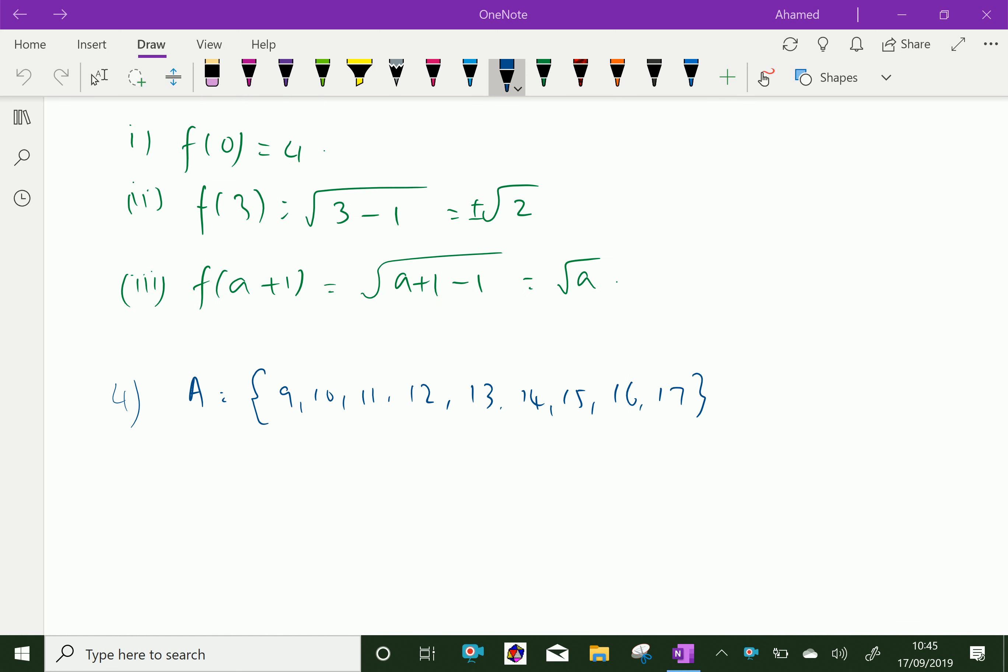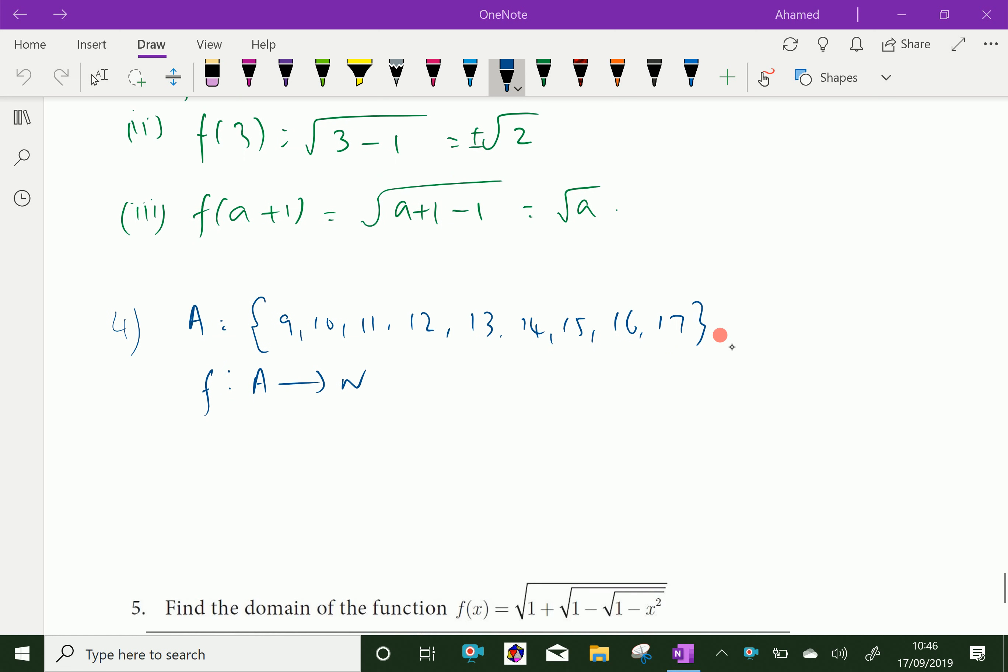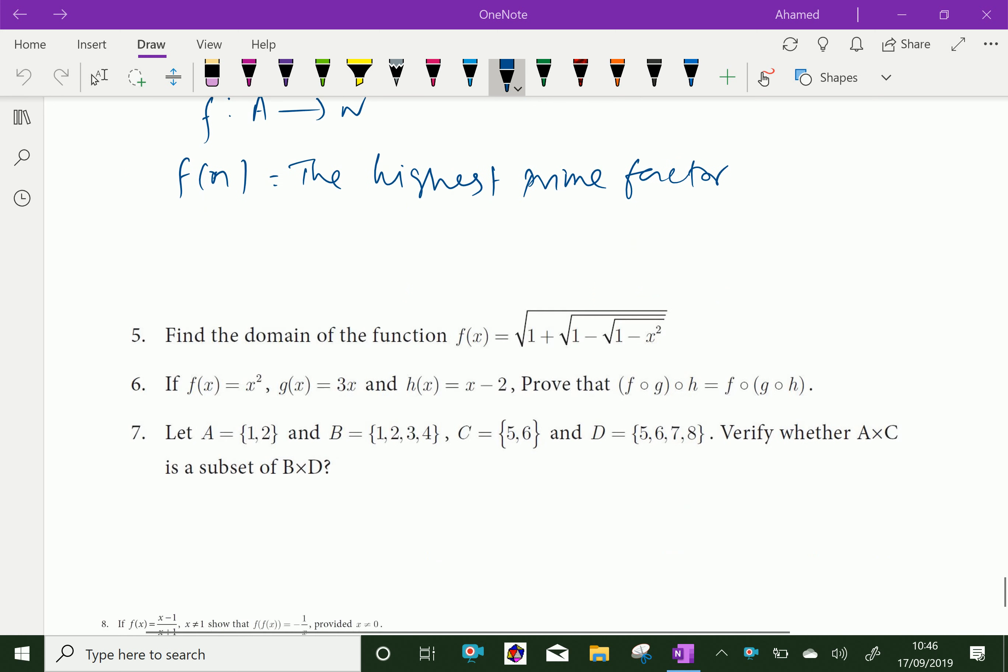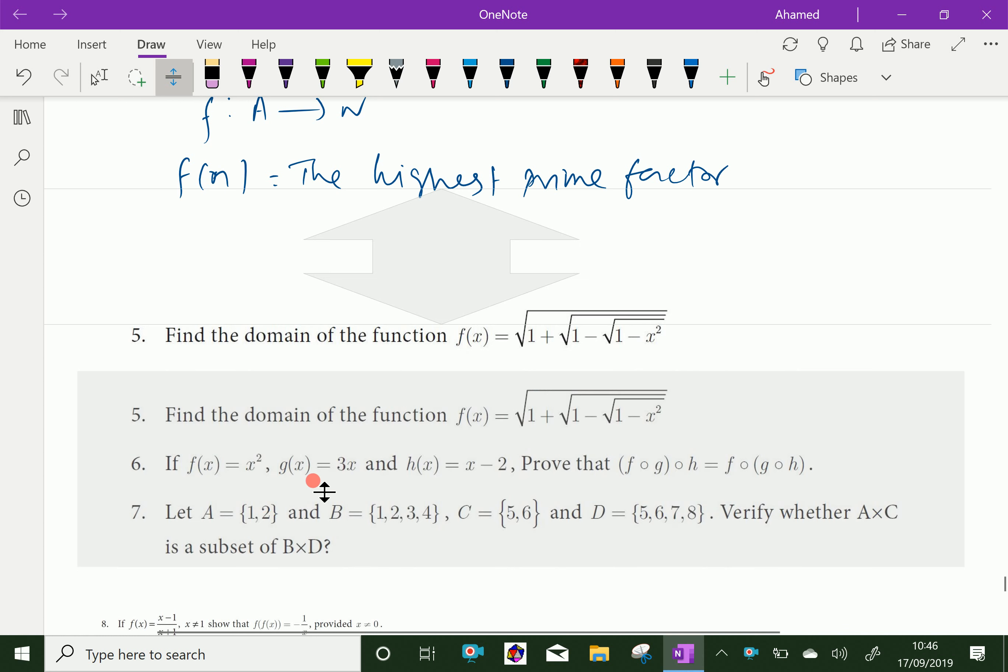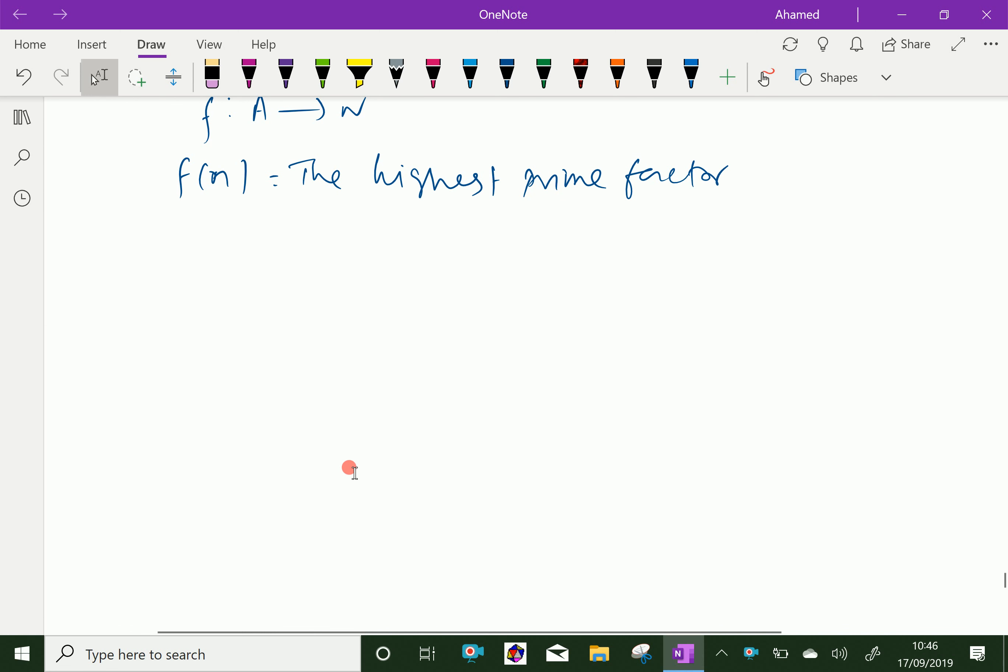Now the function is f from A to N. The function f of n is the highest prime factor of n, which is an element of the natural numbers.